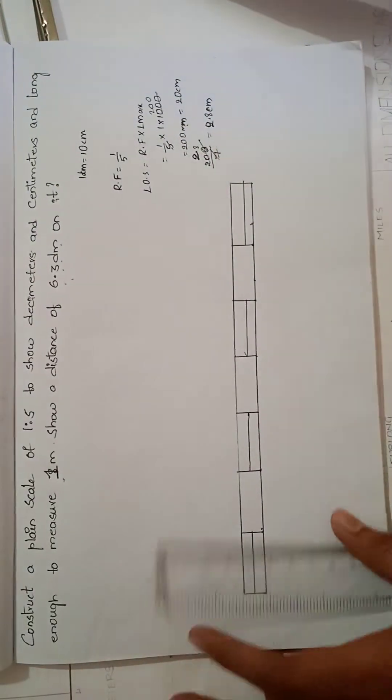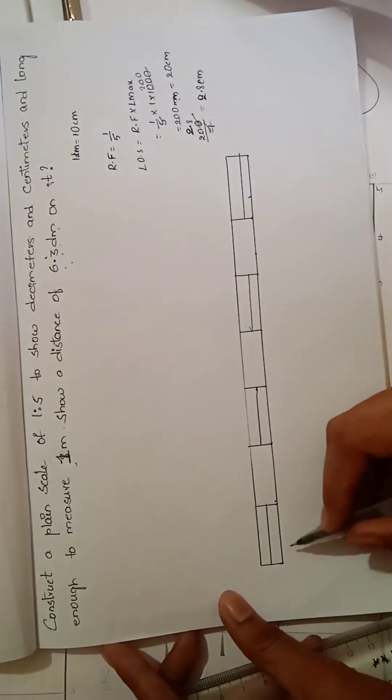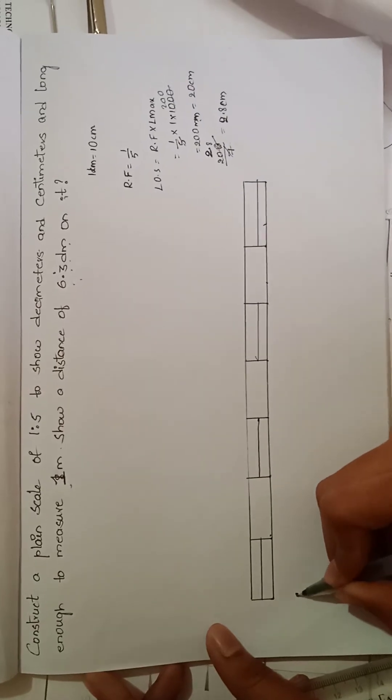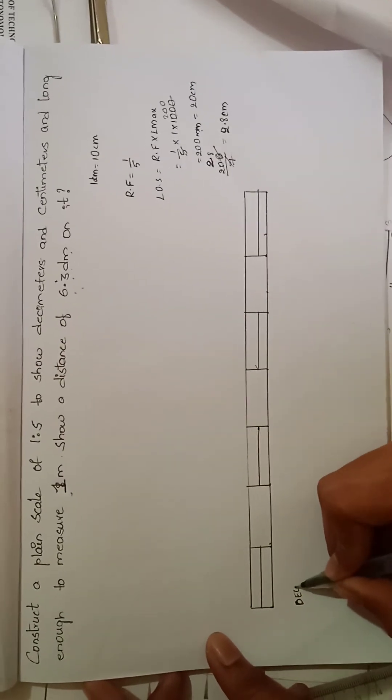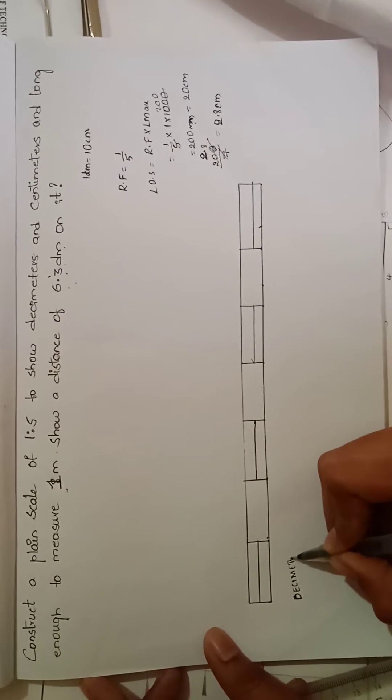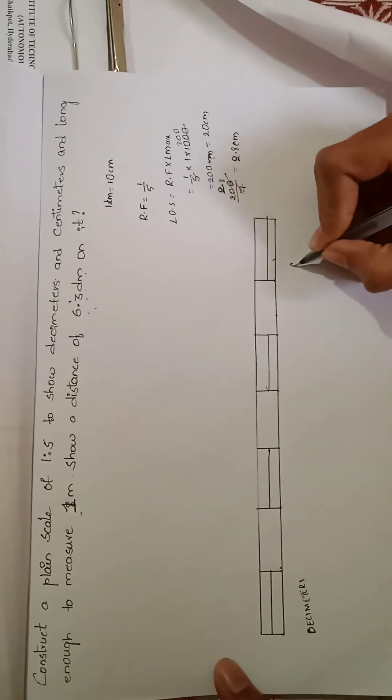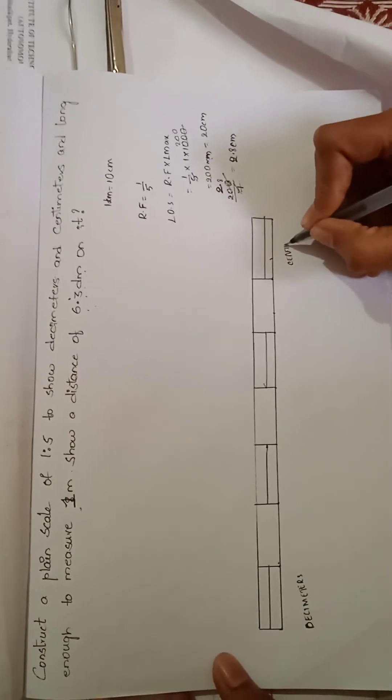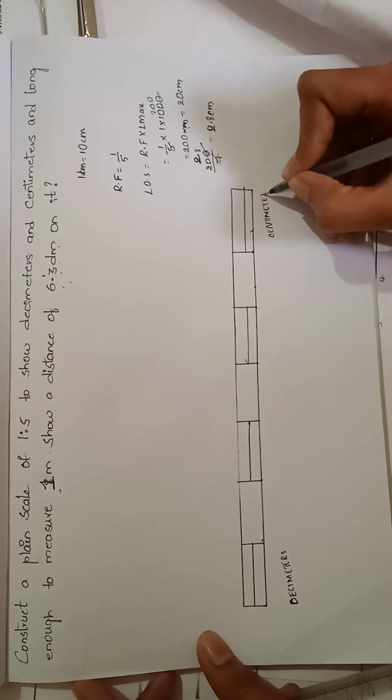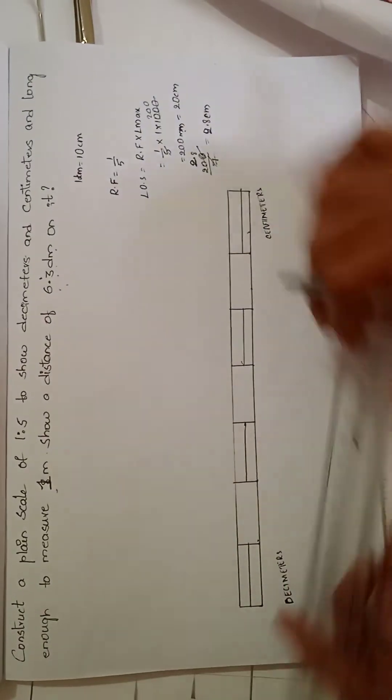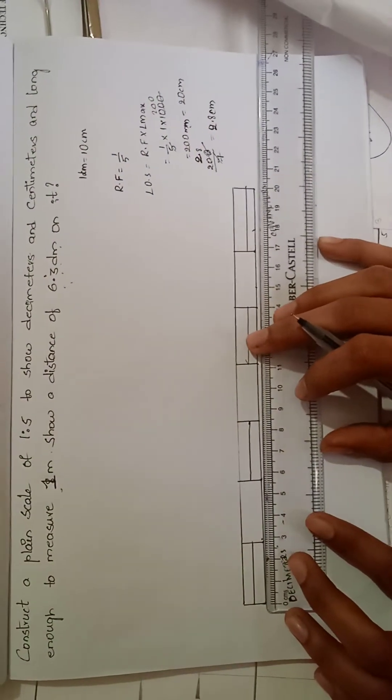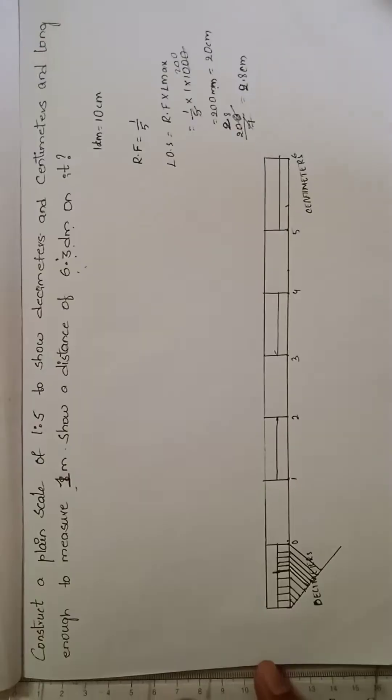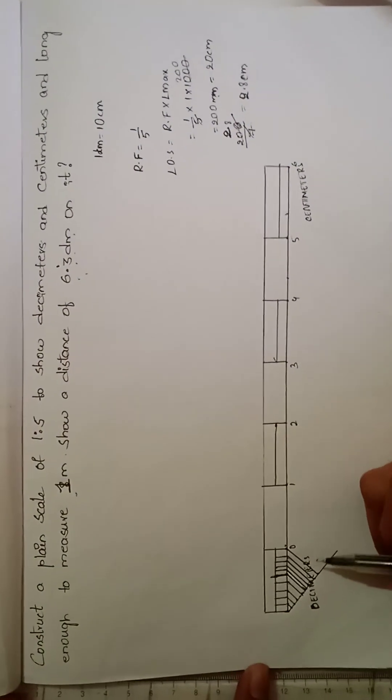Now as this is decimeters to centimeters, this is the decimeters and this is centimeters. We have to divide this into 10 parts. We have to divide this into 10 parts.